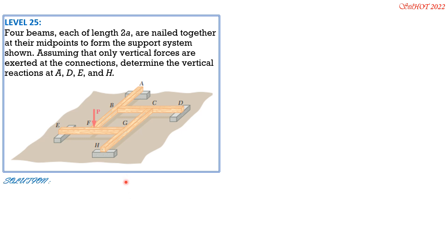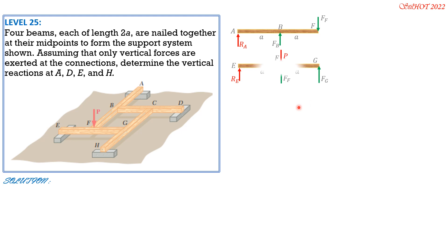For beam AFB: the load P acts on beam EFG, not on AFB, so AFB has only the nail force at F. For beam EFG: reaction R_E is upward, load P acts downward, nail force F_F is shown, and nail force F_G is assumed upward. Action-reaction must be applied consistently when drawing adjacent members.